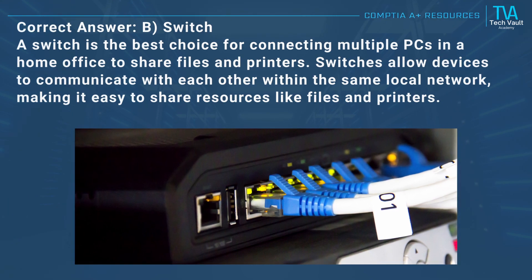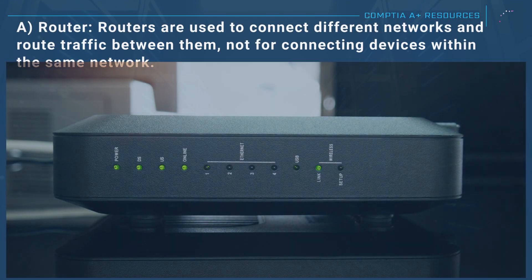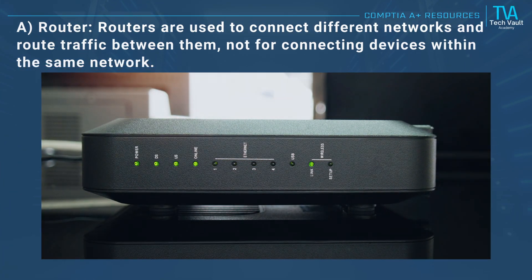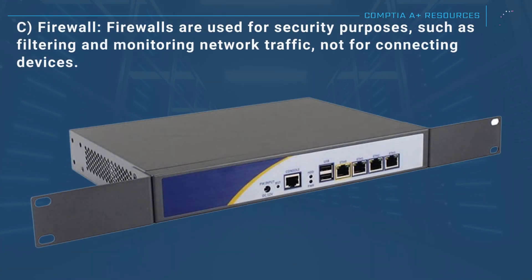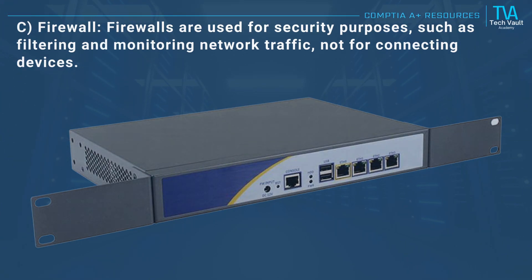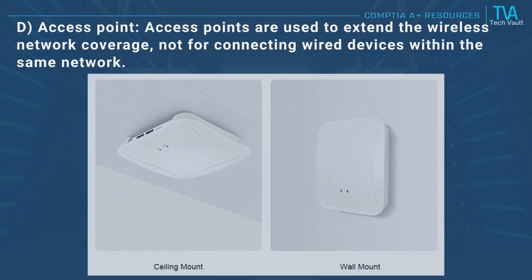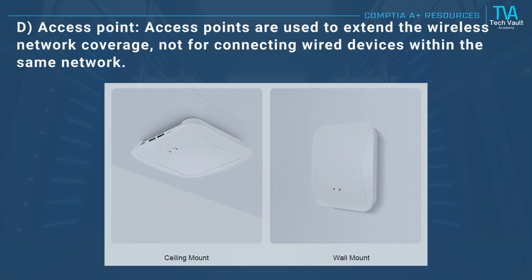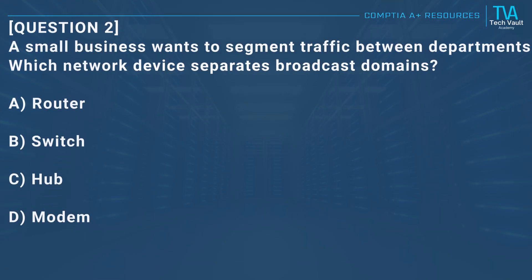Switches allow devices to communicate with each other within the same local network, making it easy to share resources like files and printers. A router: routers are used to connect different networks and route traffic between them, not for connecting devices within the same network. C, firewall: firewalls are used for security purposes such as filtering and monitoring network traffic, not for connecting devices. D, access point: access points are used to extend wireless network coverage, not for connecting wired devices within the same network.